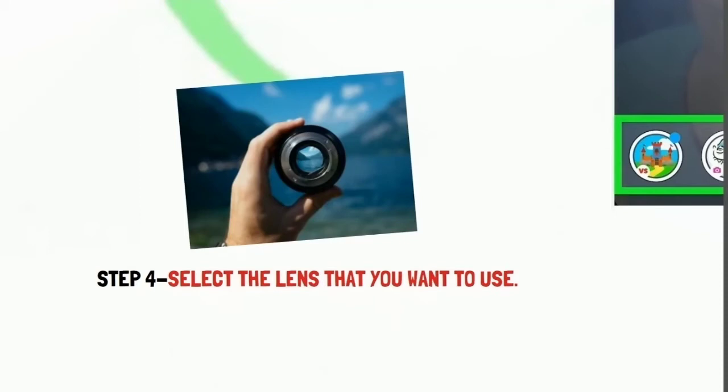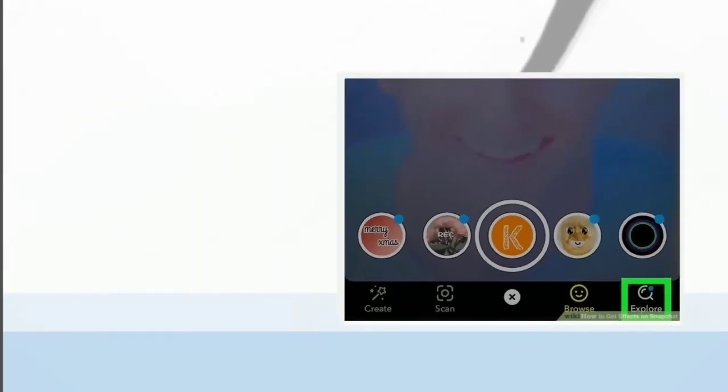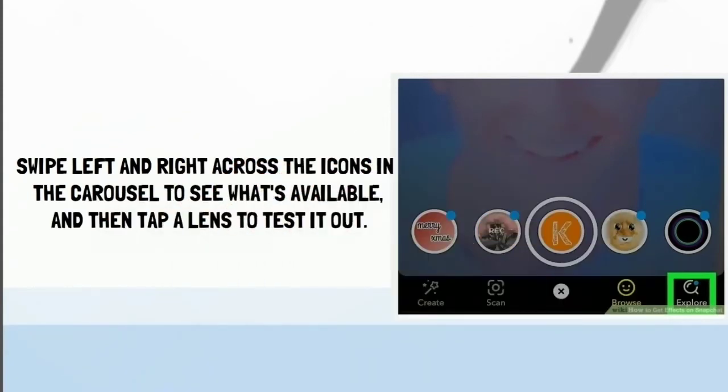Step 4: select the lens that you want to use. Swipe left and right across the icons in the carousel to see what's available, and then tap a lens to test it out.